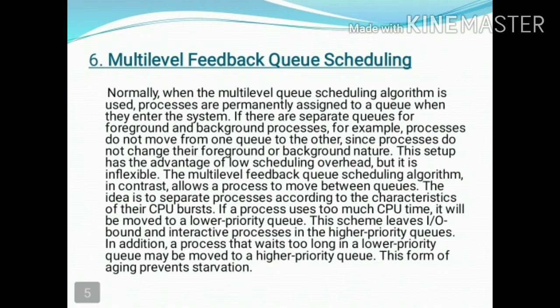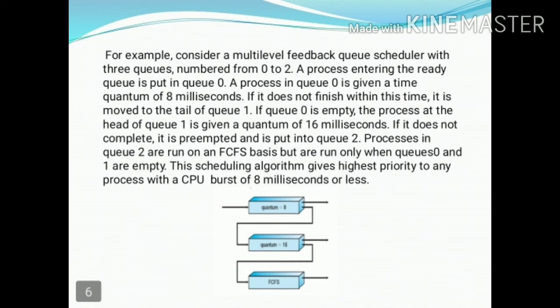In multi-level feedback queue scheduling, processes can move between the queues. The idea is to separate processes according to their CPU burst characteristics. If a process uses too much CPU time, it will be moved to a lower priority queue. This mechanism is able to implement the aging technique, which helps prevent starvation.